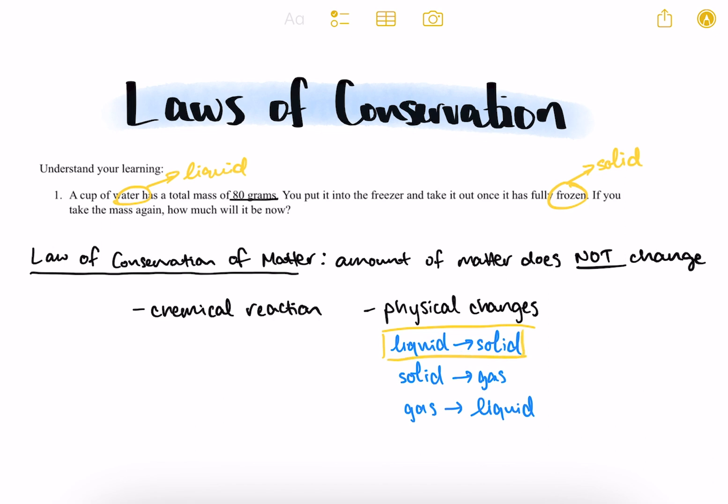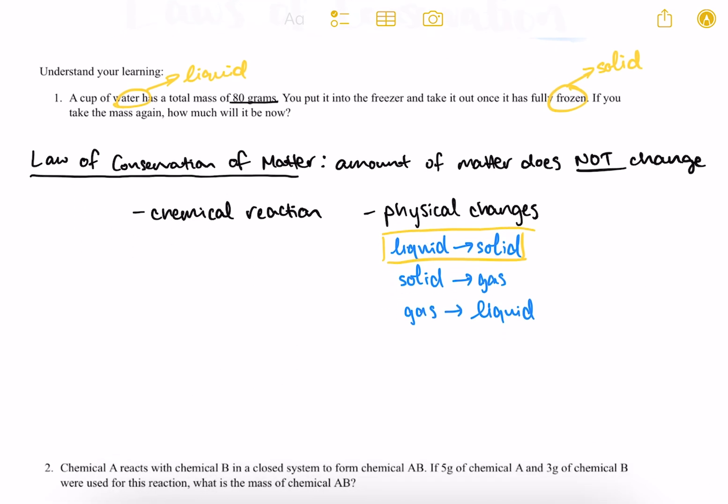And so if we look at the law of conservation of matter and what it states, it says that the amount of matter does not change. So why does that apply? Well, mass is a measurement of the amount of matter in an object or substance.